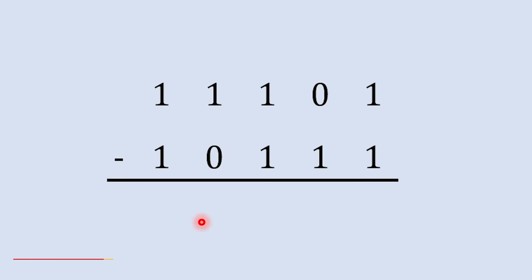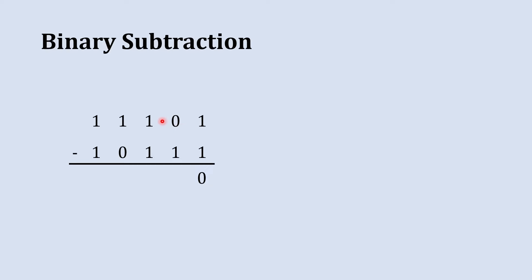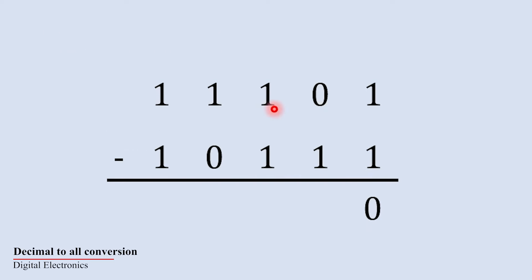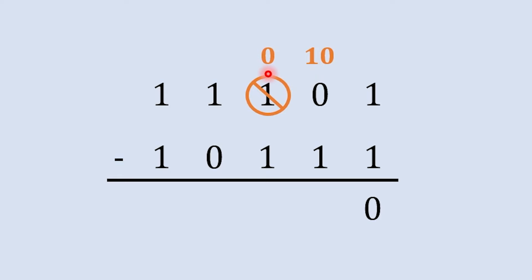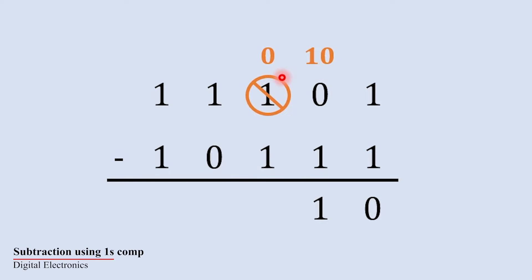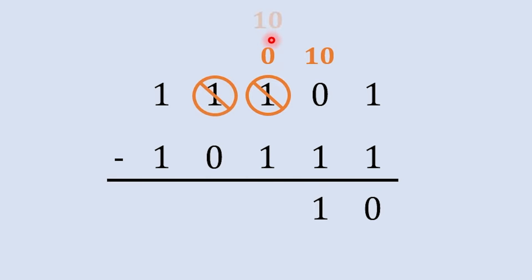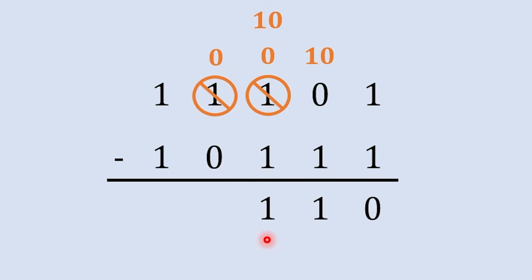Now we are going to subtract these two numbers, starting with the rightmost column. One minus one is zero. In the next column we try to subtract one from zero — not possible — so we borrow from the next column. That column becomes one-zero and its original position becomes zero. Subtracting one from one-zero gives one. In the following column, zero minus one is not possible, so again we borrow from the next column. It becomes one-zero and that position becomes zero. Subtracting one from one-zero gives one again.